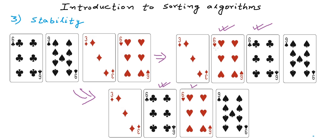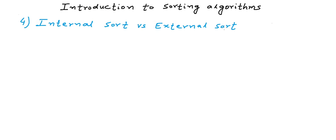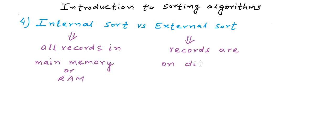The next parameter of classification is whether a sort is internal sort or external sort. When all the records that need to be sorted are in main memory or RAM, then such sort is internal sort. And if the records are on auxiliary storage like disk and tapes, quite often because it's not possible to get all of them in the main memory in one go, then we call such a sort external sort.